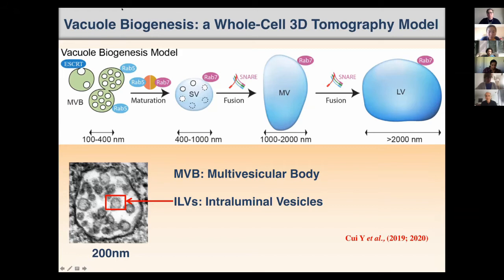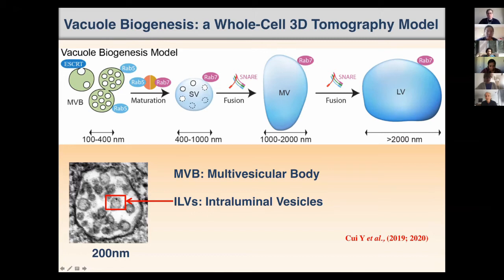My postdoc developed electron tomography to build a model of vacuole formation in root cells. The model works like this: the big central vacuole is derived first from MVB fusion to become small vacuoles, and then fusion of small vacuoles results in medium-sized vacuoles, and further fusion leads to the large central vacuole. The multivesicular bodies can contain many intraluminal vesicles — this is an important concept.